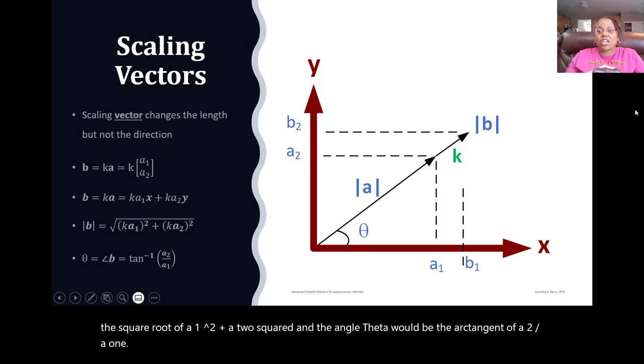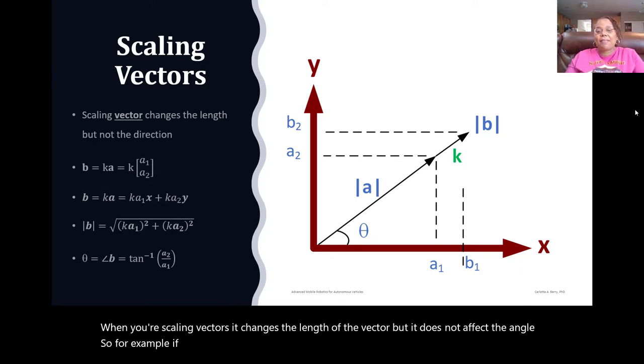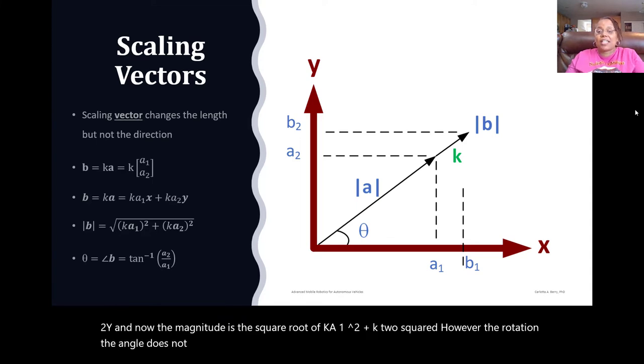When you're scaling vectors, it changes the length of the vector but it does not affect the angle. So for example, if you multiply a by the scalar k, it would be k times a1, a2, or written as k a1x plus k a2y, and now the magnitude is the square root of k a1 squared plus k a2 squared. However, the angle does not change, so it would still just be the arctangent of a2 over a1.